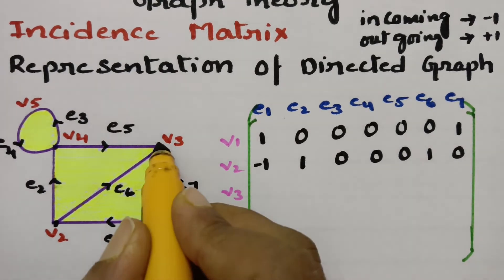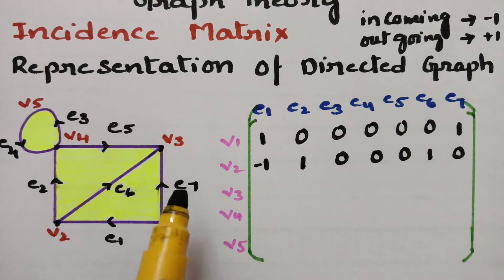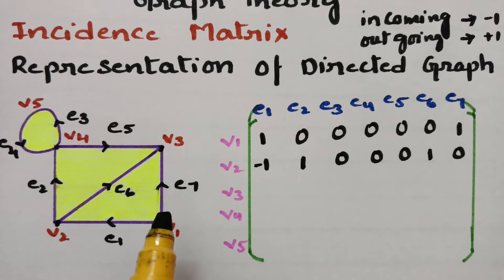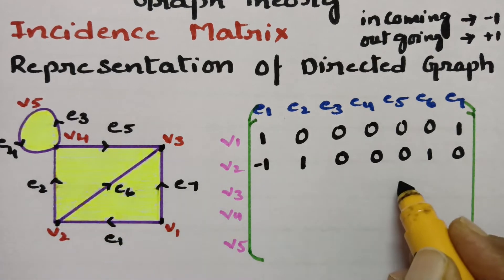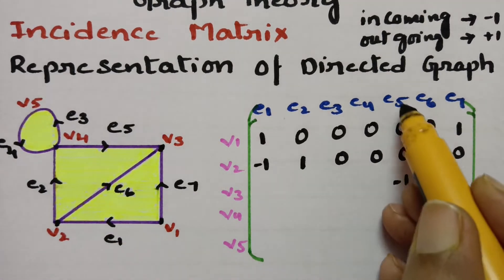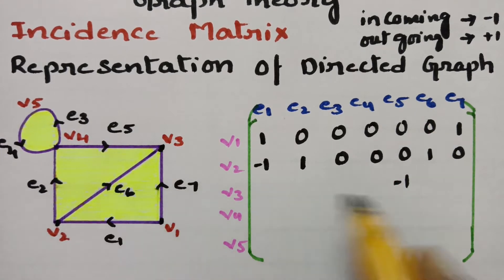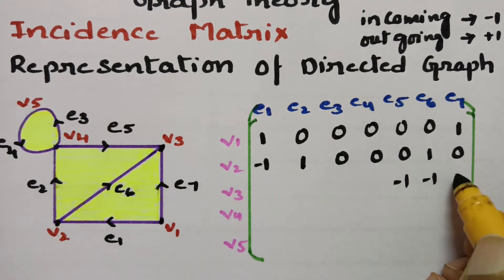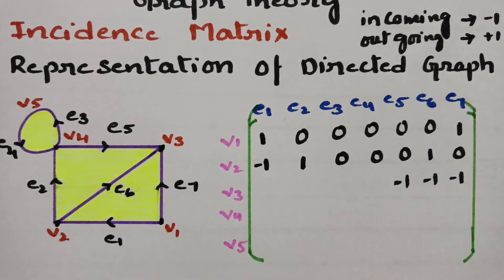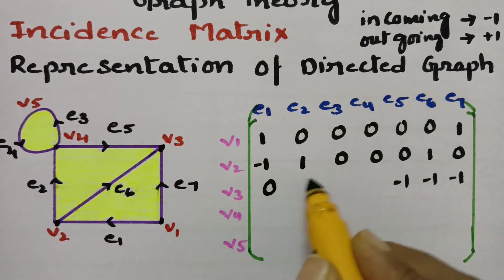Coming to v3, it has three edges incident towards it. e5 is incoming, so minus 1. e6 is also inward, so minus 1. e7 is also towards v3 — that is also an incoming edge, minus 1. Three representations, and remaining are all zeros.